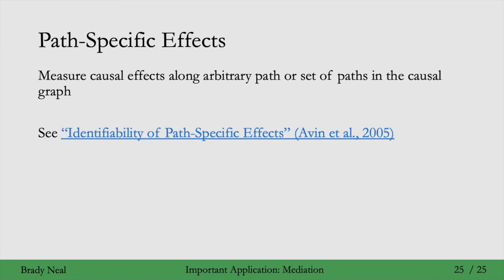Finally, you might be interested in measuring causal effects flowing along arbitrary paths in the graph — measuring the effect along one path or multiple paths but not all paths from T to Y. These are known as path-specific effects, and if you want to learn more you can check out the identifiability of path-specific effects paper from 2005. That's the end of this course on Introduction to Causal Inference — thanks for sticking through to the end, I hope you enjoyed it.